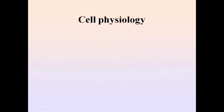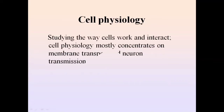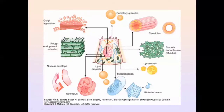Cell physiology is the study of the functions of the cell: how these cells interact, what the normal functioning of the cells is, which processes take place inside the cell, and how it interacts with the surrounding environment. In cell physiology we basically study the cell, how it performs normal functions, and the cell organelles — their description and the function and working of each organelle.